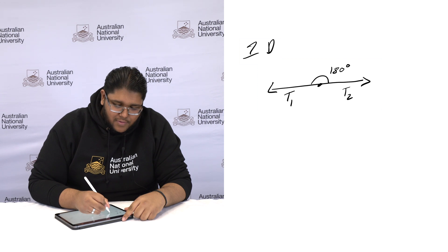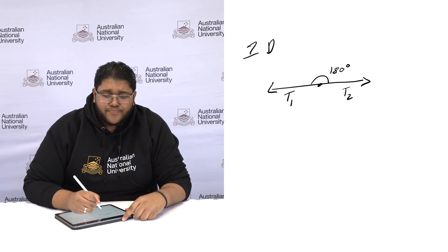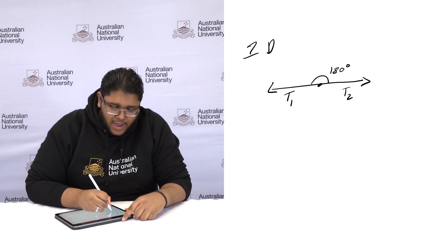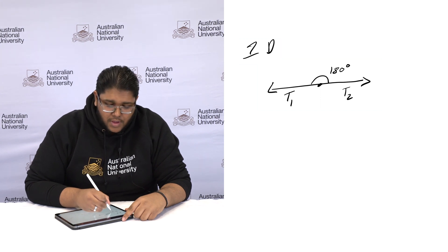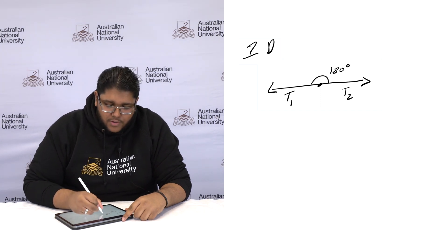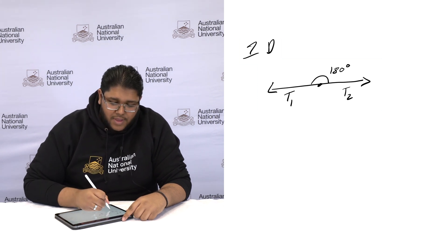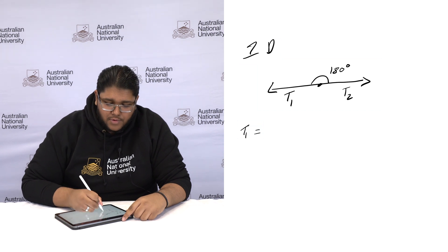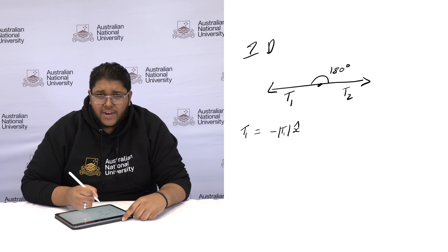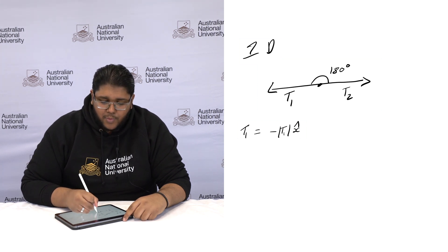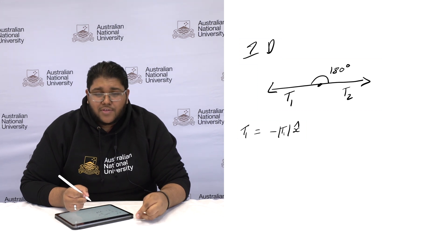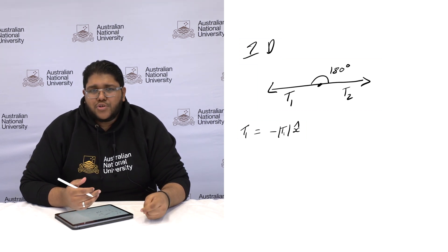So first we need to understand it in a one-dimensional space. In one dimension this would look like a flat plane and this angle here would be 180 degrees. Coming out of this fixed point which would be the marshmallow there would be two sets of forces. The force coming out of t1 would be equal to negative t1 in the direction of x.